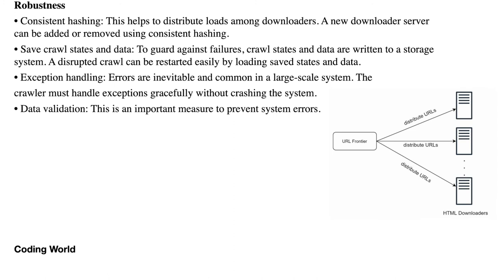For robustness in a distributed system, we should use consistent hashing so that adding or removing servers is handled gracefully. We must also save crawler state and data — if a server goes down, every crawler's state should be persisted so that when the server comes back up it can resume from where it left off. Exception handling is also important because unexpected failures will occur. Data validation ensures that what we are crawling is valid.